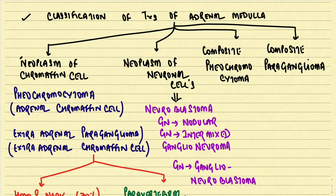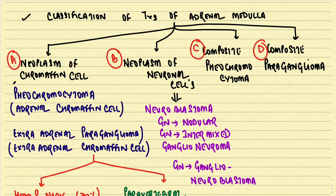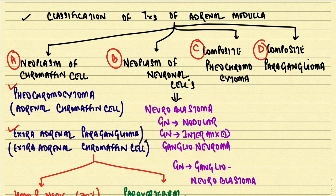The tumors of the adrenal medulla can be divided into four categories: neoplasms of chromaffin cells, neoplasms of neuronal cells, composite pheochromocytoma, and composite paraganglioma. From chromaffin cells, two important tumors arise: pheochromocytoma, arising from chromaffin cells within the adrenals, and extra-adrenal paraganglioma, arising from chromaffin cells situated outside the adrenals.